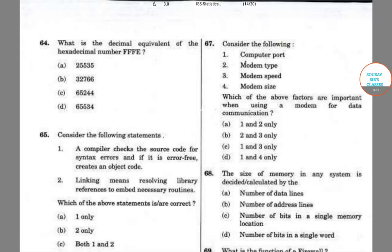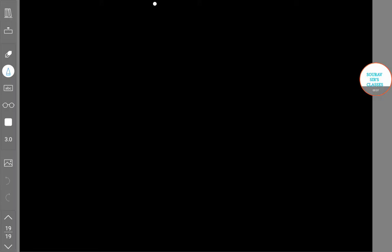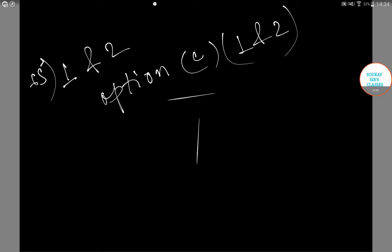So let's start with the question. A computer checks the source code for syntax errors and processes with its error force and resolving library references to embed necessary routines is known for linking. So correct considerations are 1 and 2. Option C is correct for question number 65 and where 1 and 2 of consideration are correct.